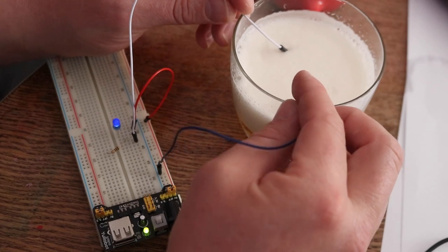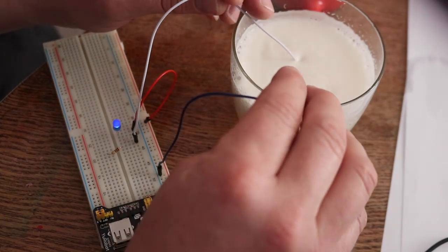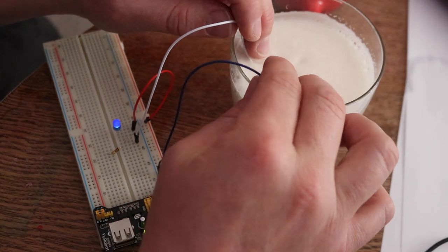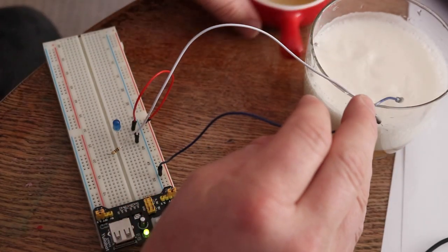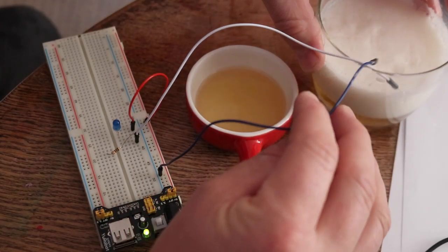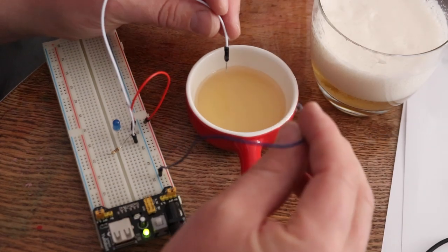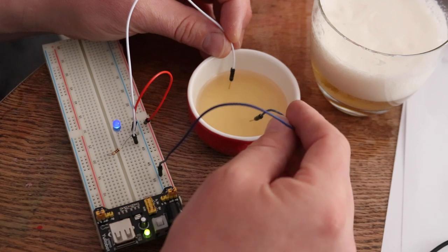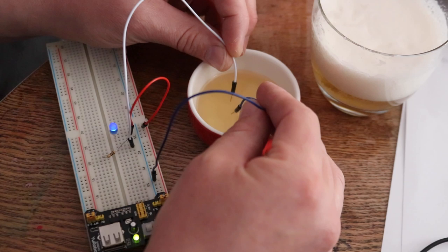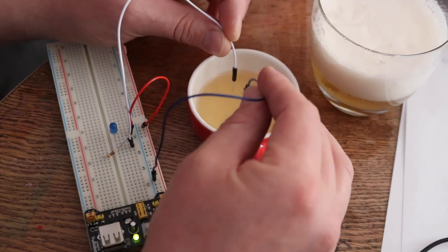So whilst there's some voltage getting through there, there isn't a heck of a lot. But if I push these all the way down into the liquid of the beer or even move across to some beer that we've got on the side here you'll see that the LED is brighter.